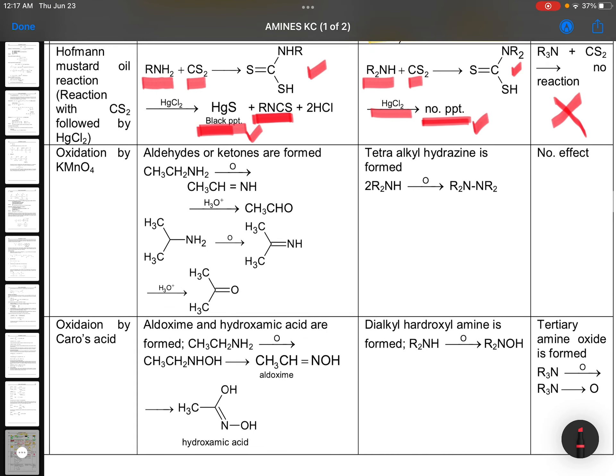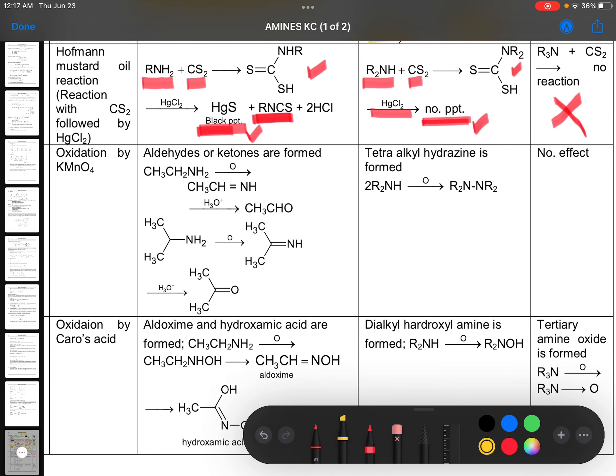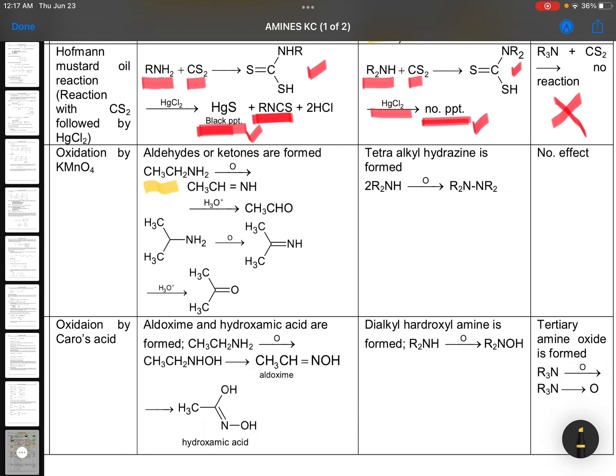Oxidation by KMnO4. This is again interesting. Oxidation. For example, if you are having CH3, CH2, NH2. Now that means here you have two hydrogens. In that case, first it is oxidized to CH3, CH double bond NH minus two hydrogens. And then hydrolysis, you will be getting there aldehydes and ketones are also possible. You can check this one. Aldehydes and ketones depends on where NH2 group is attached. So this is oxidation by KMnO4. Tetraalkyl hydrazine is formed. R2NH will give you R2NNR2. Tetraalkyl hydrazine. And here there is no effect. There is no reaction on it.